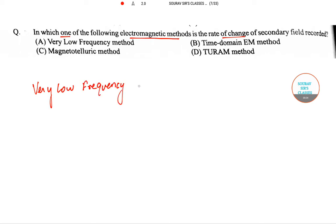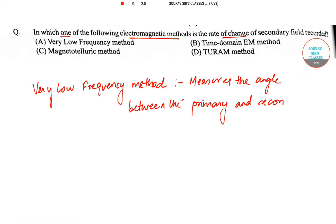Now there will be only one answer to this particular question. But since there are four methods mentioned, I wish to tell you what this particular method is used in measuring. So this particular method actually measures the angle between the primary and secondary fields. This is the first one.